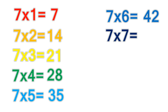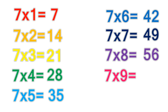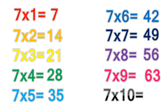7 times 7 equals 49. 7 times 8 equals 56. 7 times 9 equals 63. 7 times 10 equals 70.